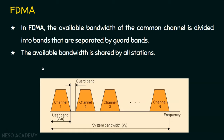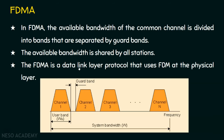The available bandwidth is shared by all stations. FDMA is a data link layer protocol — we are talking about media access control. However, FDM, that is frequency division multiplexing, is not done at the data link layer; it is done at the physical layer, because only in the physical layer is data transmitted as signals. So in terms of protocol, FDMA is a data link layer protocol, but FDM operates at the physical layer.